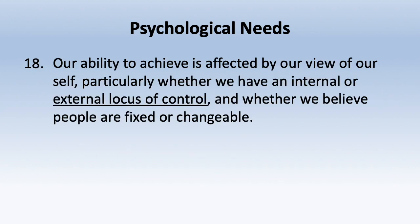Our ability to achieve is affected by our view of ourselves — particularly whether we have an internal or external locus of control, and whether we believe people are fixed or changeable. Locus of control means: do we believe we're victims of our circumstances or masters of them? External locus of control says we're victims — whatever happens in the world, we can't do anything about it.